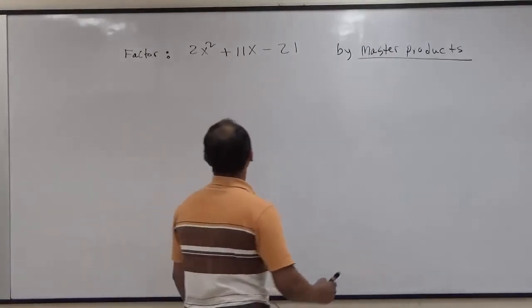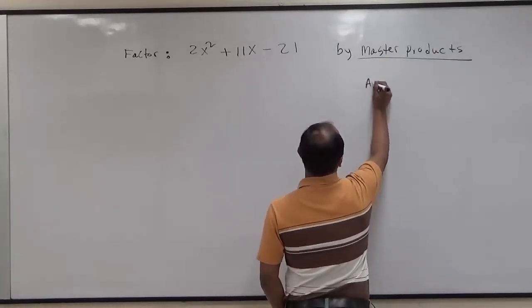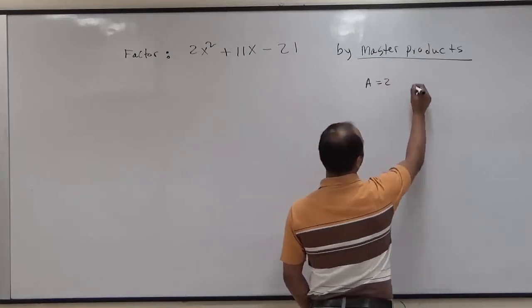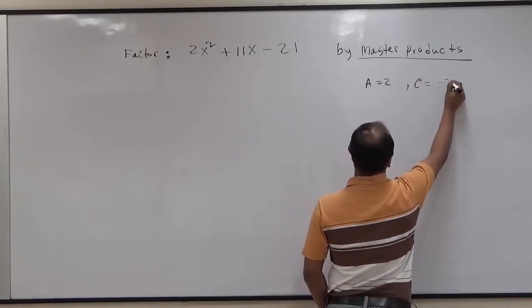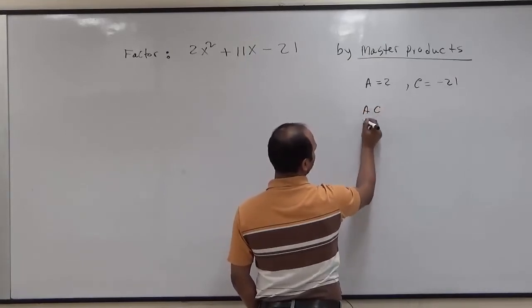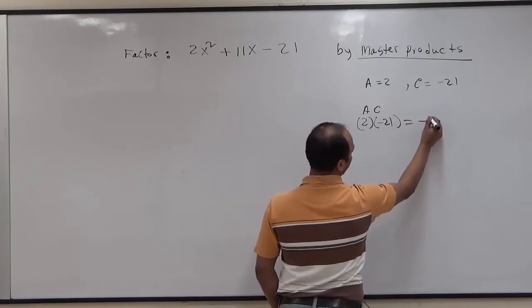First, we will multiply A times C. A equals 2 and C equals negative 21. So if we multiply A times C, we'll get 2 times negative 21, which will give us negative 42.